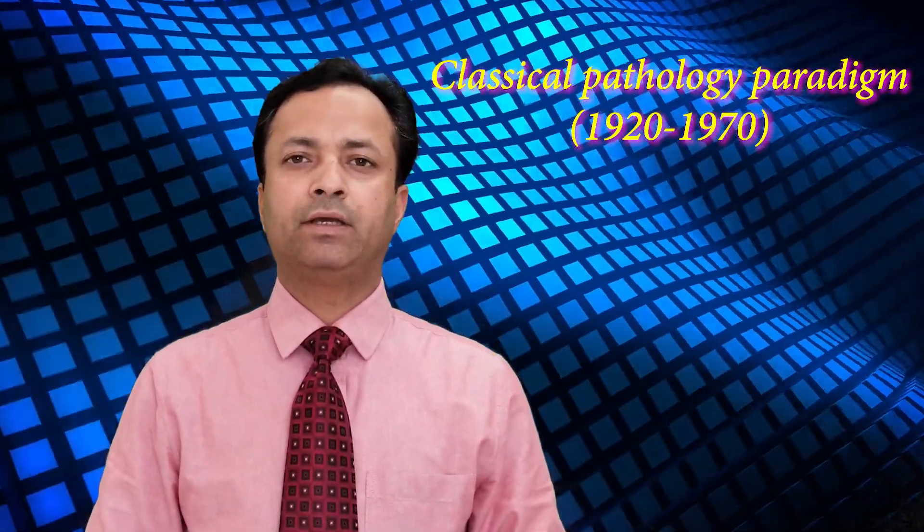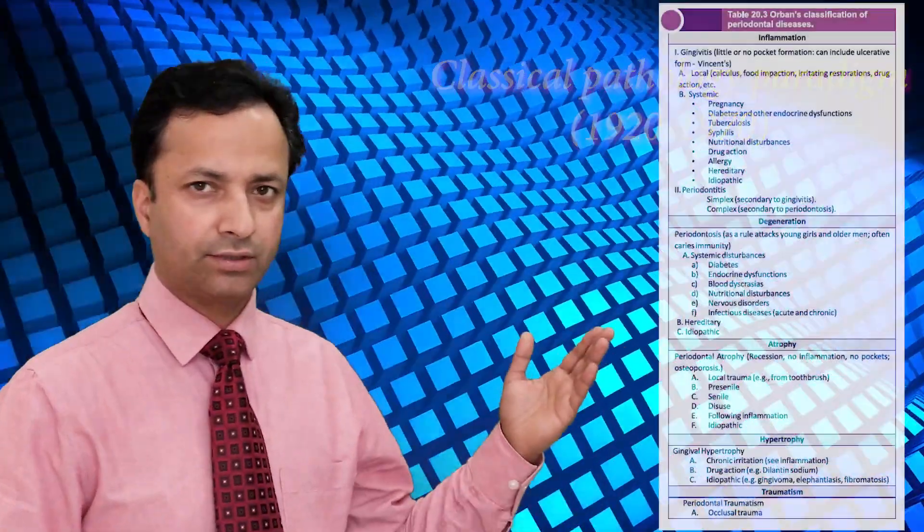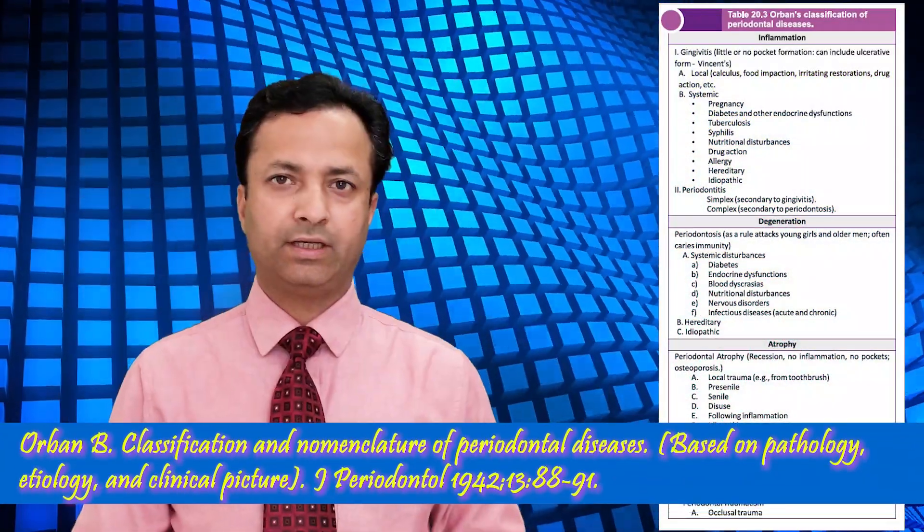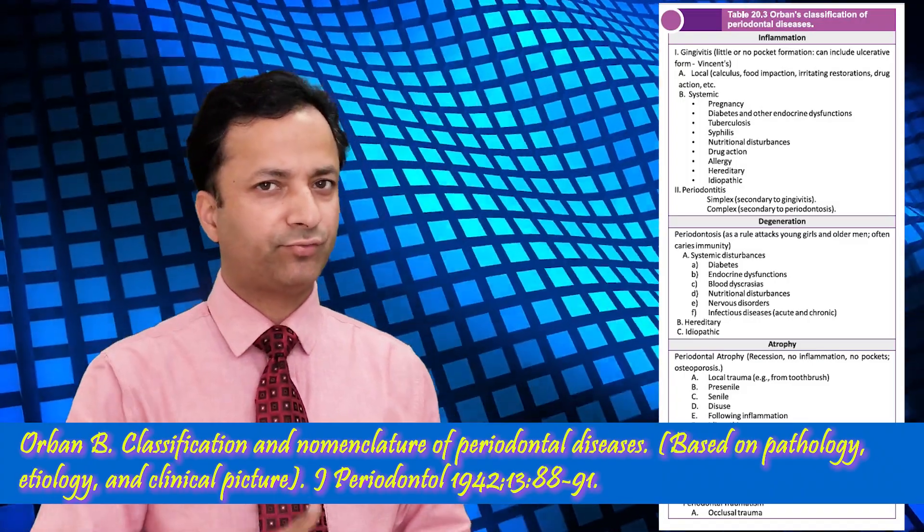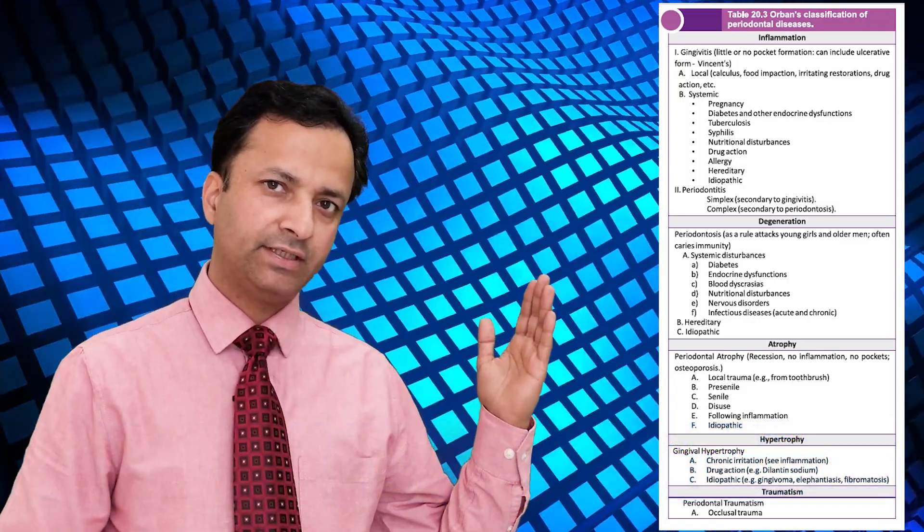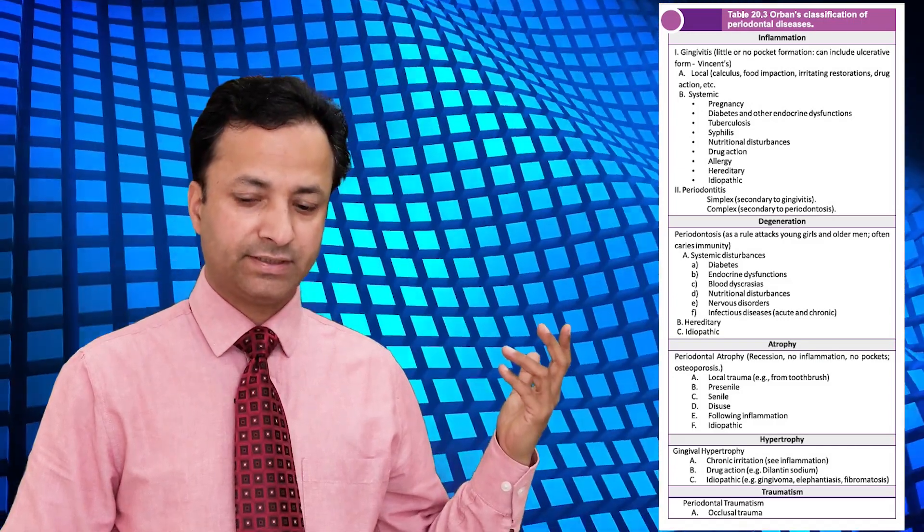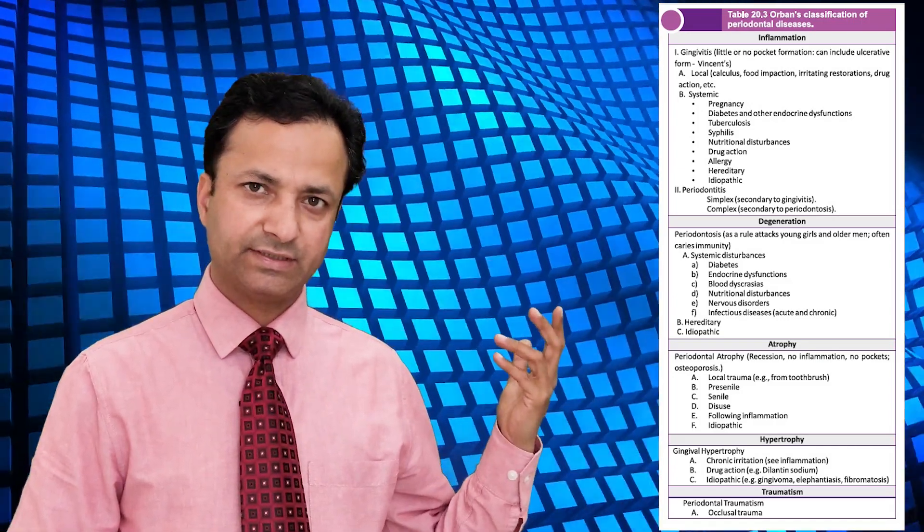Now this is Dr. Orban's classification system. You can see that he has classified the periodontal diseases into five categories. First is the inflammatory diseases, then we have the degenerative diseases, then we have atrophic diseases, then we have hypertrophic diseases and then we have the traumatic diseases.